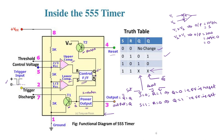We are going to apply a negative-going trigger pulse at pin 2, which is connected to the inverting terminal of the lower op-amp. Whenever it reaches a value slightly less than 1/3 of the VCC — since 1/3 VCC is the voltage applied to the positive terminal — the positive voltage is greater than the negative voltage, so the output becomes logic 1, which is S. At that time R is equal to 0, so the flip-flop will be set.